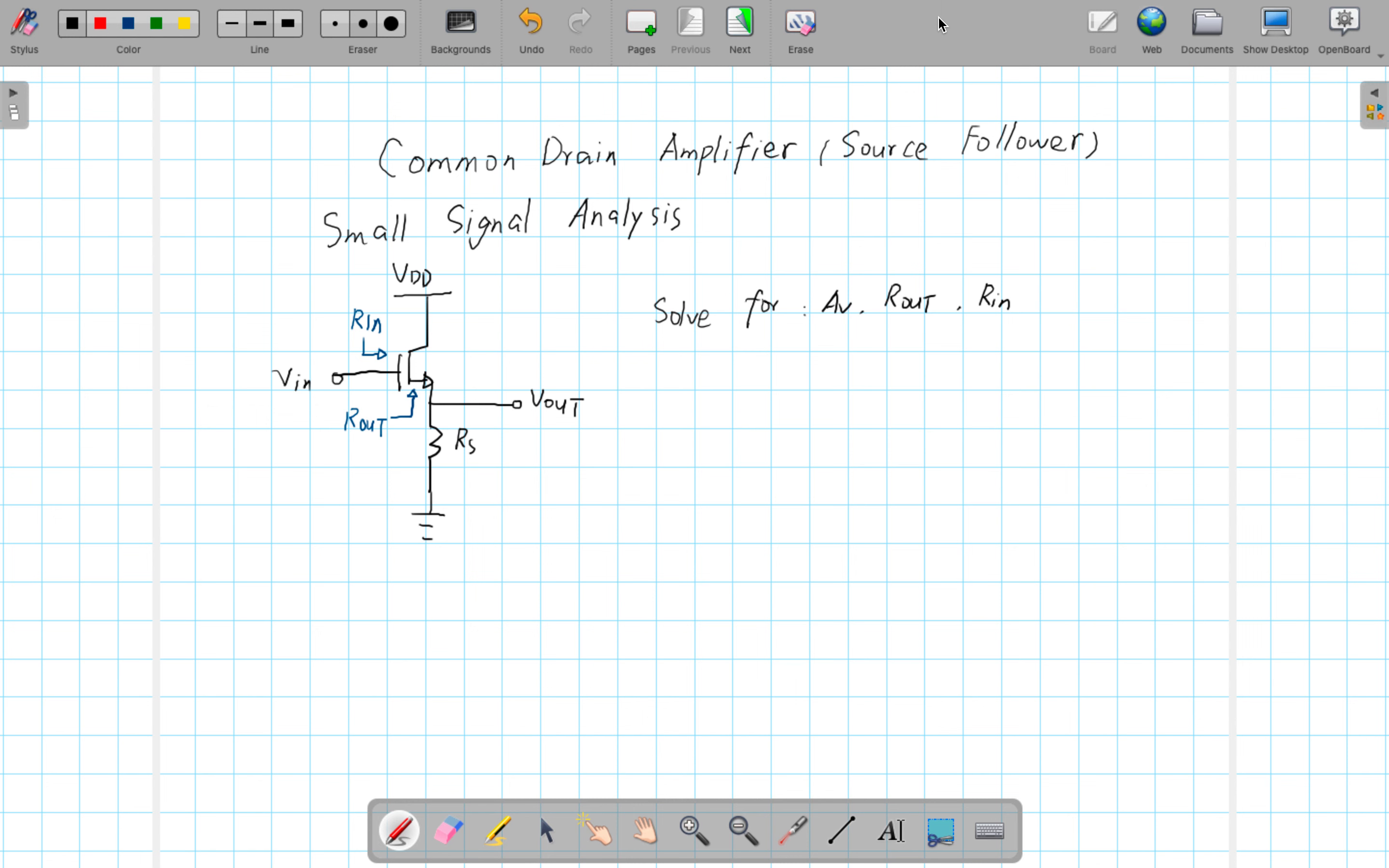Hello everyone. Today we are going to take a look at the common drain configured amplifier using a MOSFET transistor and we're going to do a small signal analysis and show you step by step how to solve for the voltage gain, the output resistance, and the input resistance.